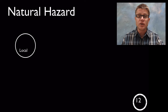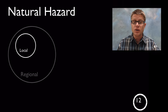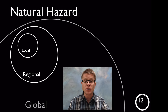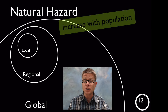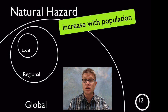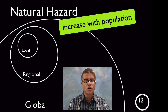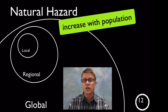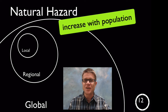Natural hazards can occur at a local area, regionally, or globally. They're not going anywhere, and they're going to increase as populations increase. Some of those are going to increase as we make changes to the global temperature. But as long as you know where they are and where they might occur, we can prepare for them and limit damage.